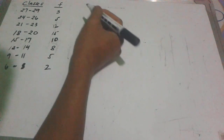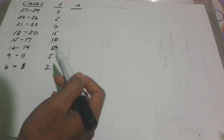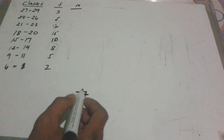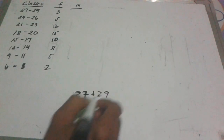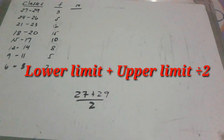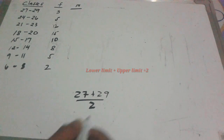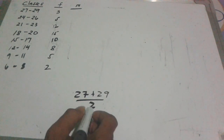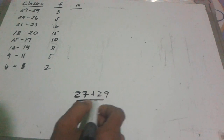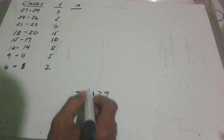We're gonna find the midpoint first. How do you find the midpoint? You take the lower limit plus the upper limit and divide by 2. So for the first class: 27 plus 29 divided by 2 is equal to 28. The next one: 24 plus 26 divided by 2 is equal to 25.